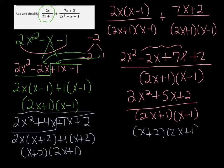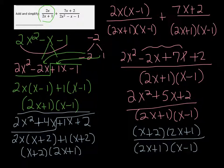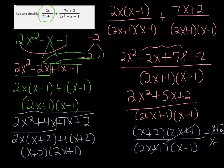And then we can see that the 2x plus 1s are going to divide out. And all you're left with is x plus 2 over x minus 1.